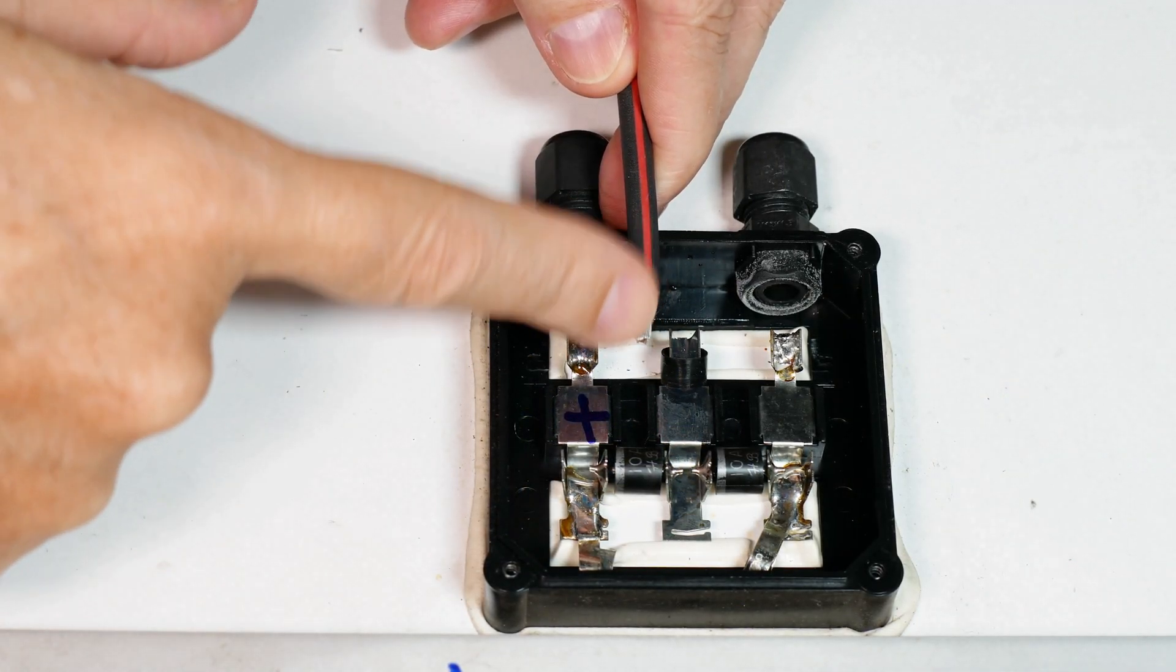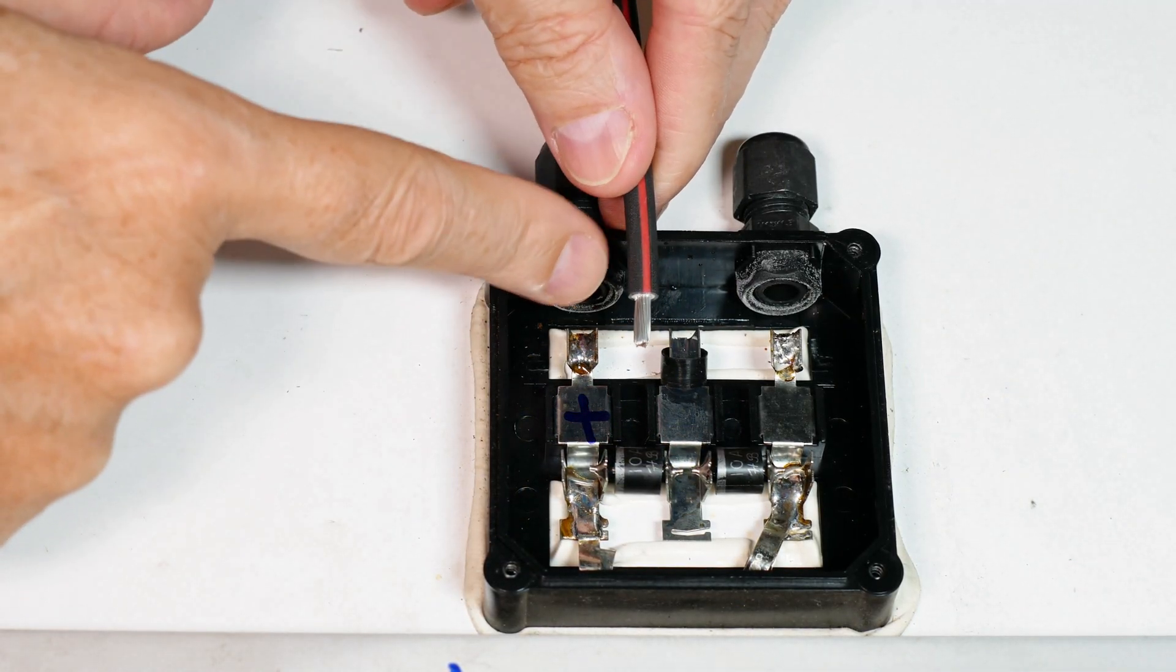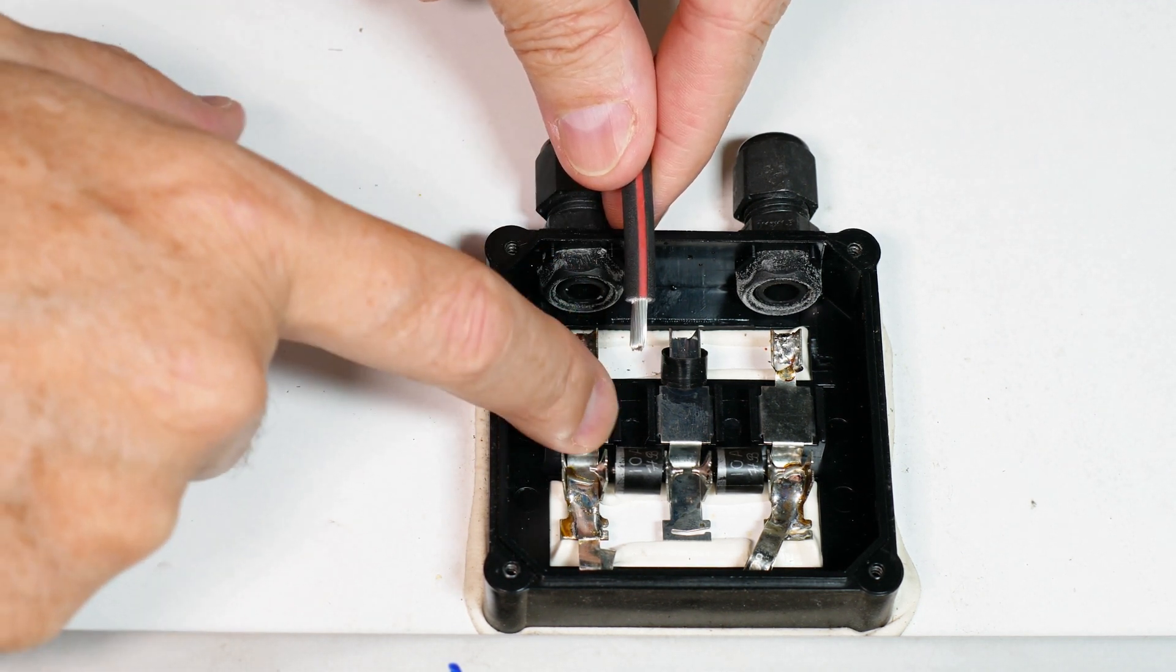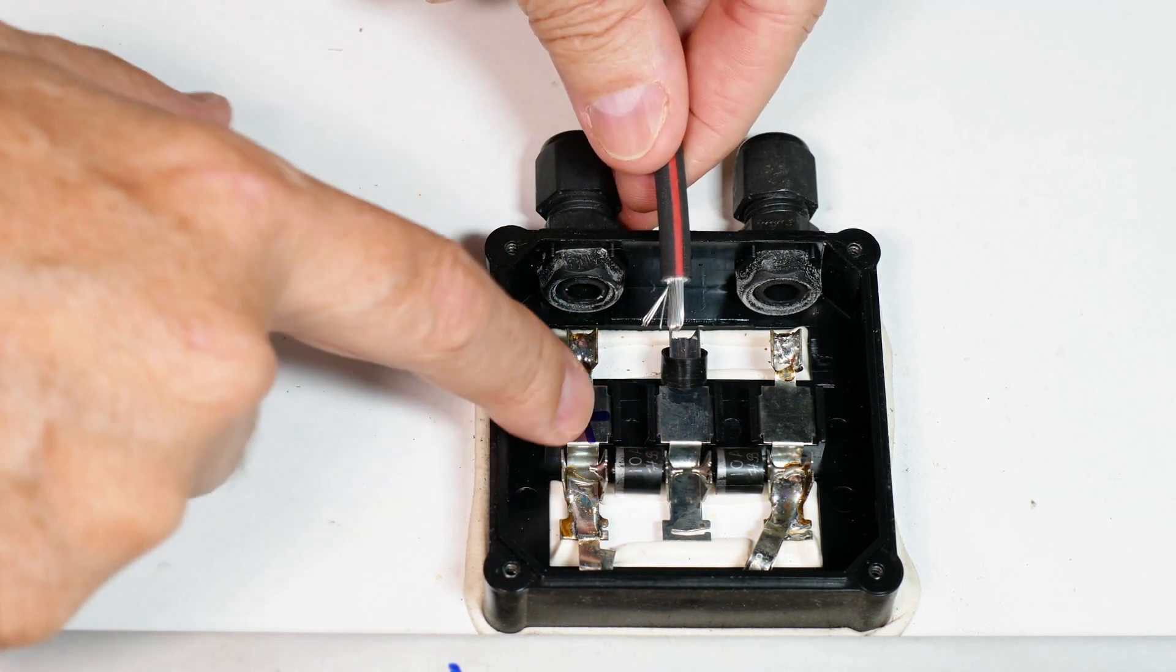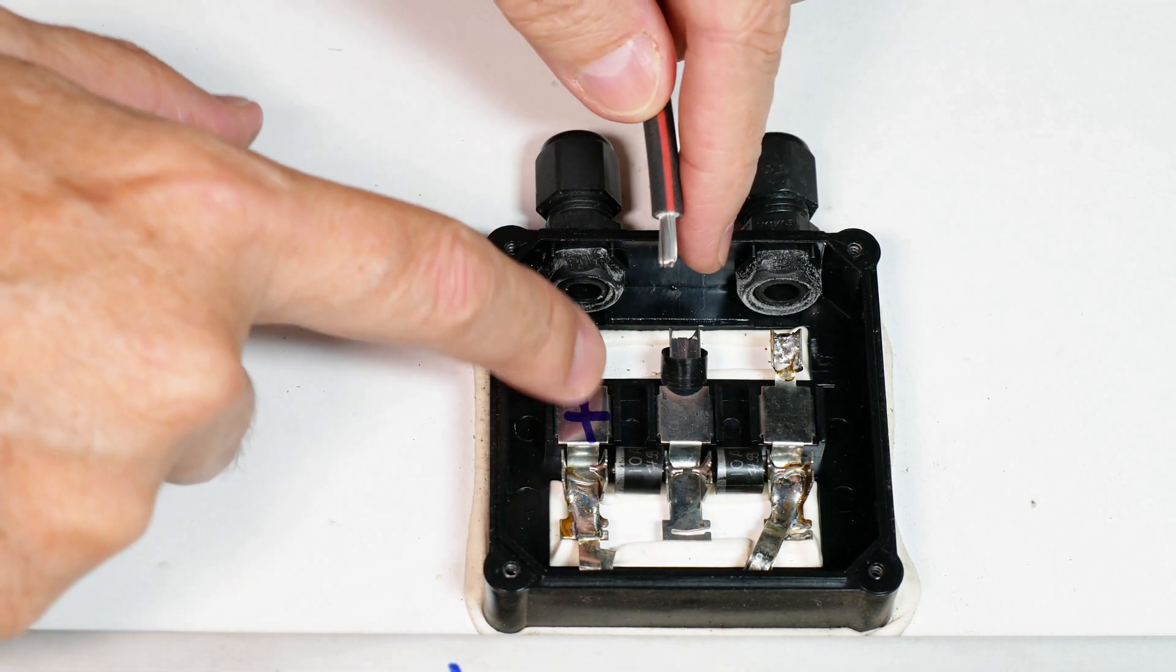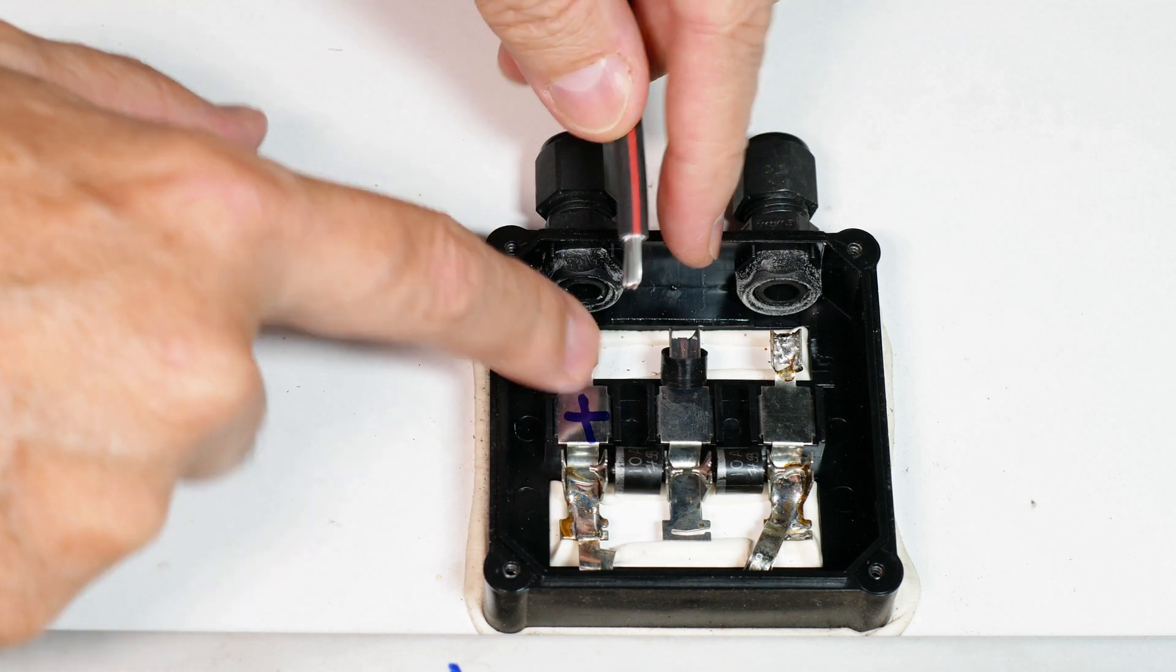The first thing I'm going to do is pre-tin this, and that is because I don't want to spend any more time applying heat to the solar panel than I have to. I don't want to melt this plastic. I don't want to pop the other solder joints. Pre-tinning is not a bad idea.